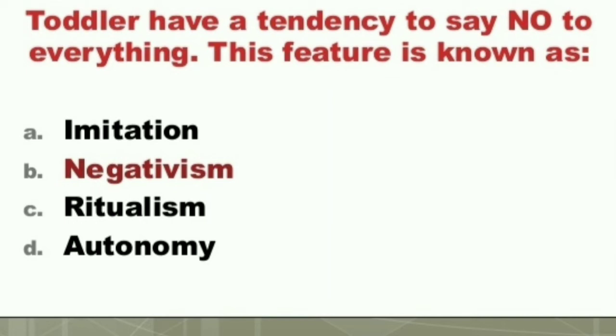Question: A toddler's tendency to say no to everything is a feature known as: A) Imitation, B) Negativism, C) Ritualism, D) Autonomy. The answer is B) Negativism. A toddler's tendency to say no to everything is called negativism.